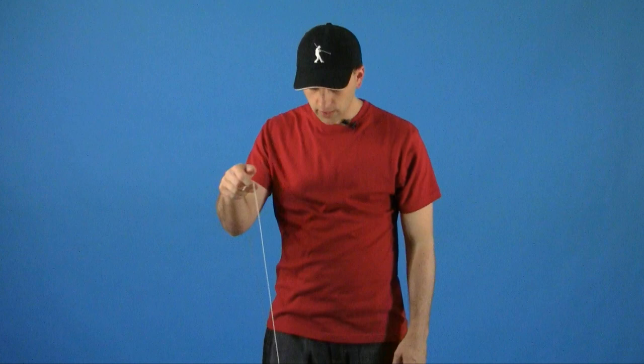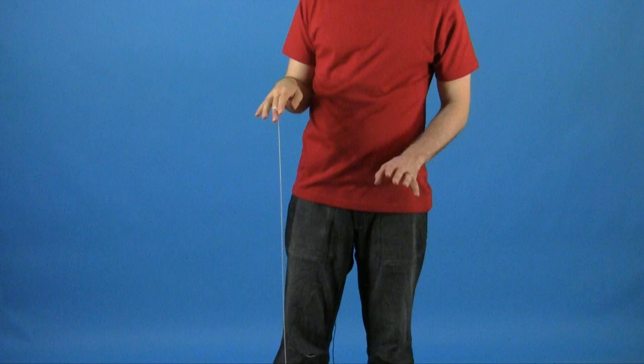Now the hook, as you can see, is very similar to the modified laceration that I showed you. It is going to start off the same way. You are going to throw your breakaway and you are going to pop the yoyo up and swing the string right underneath it.